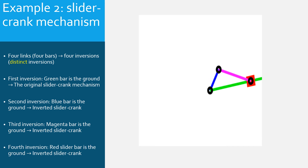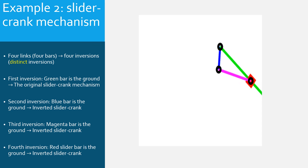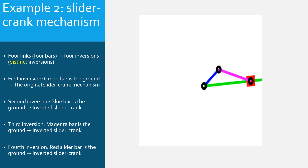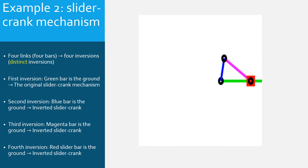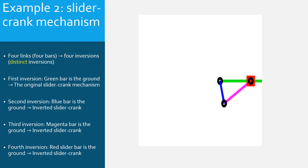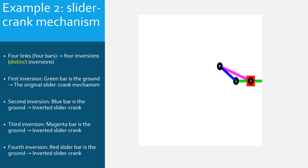This is the third inversion, where the magenta bar is grounded — the bar which is connected to the slider with a turning pair. Here the slider can only accomplish a fixed-axis rotation. The green bar is translating relatively to the slider. In the fourth inversion, the slider is static — it is the ground. All bars are moving. The blue bar can complete a full 360-degree rotation. The magenta bar has a rocker motion. The green bar can only translate; its rotation is blocked by the prismatic joint connecting it to the slider, the ground.